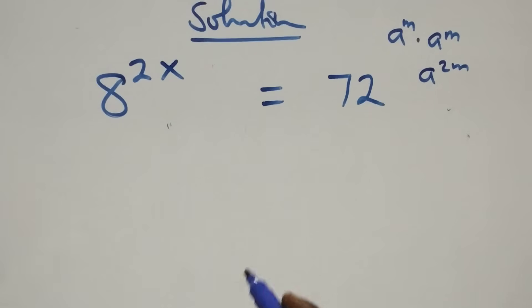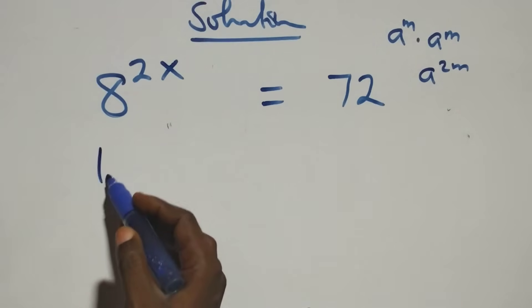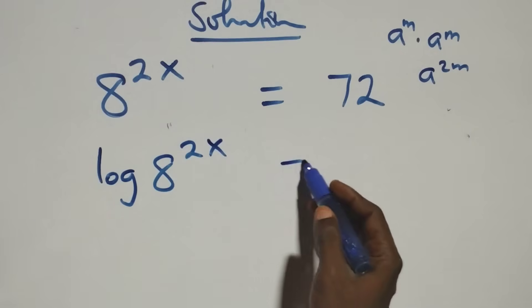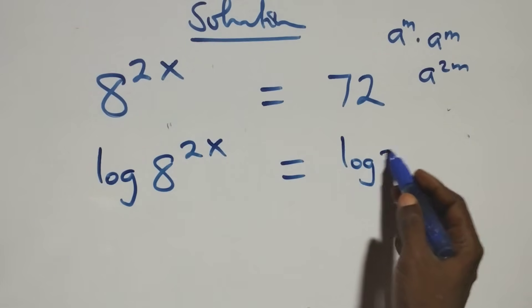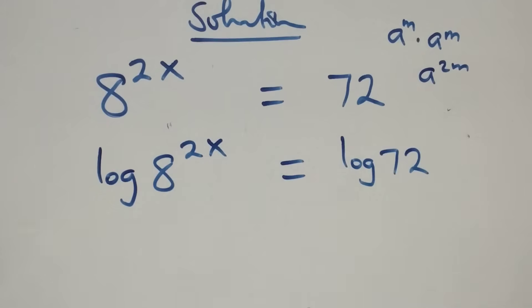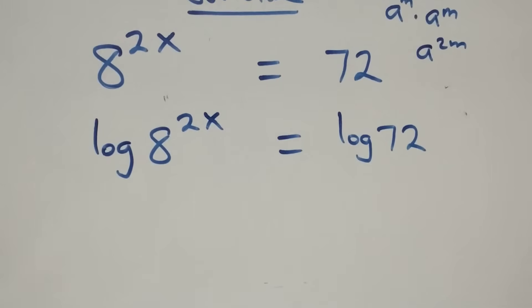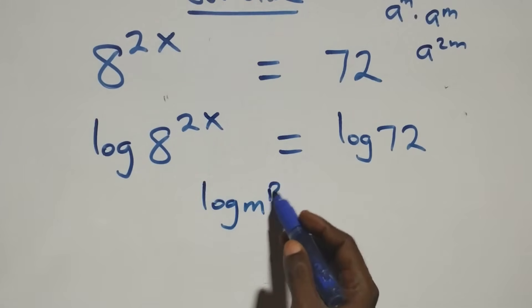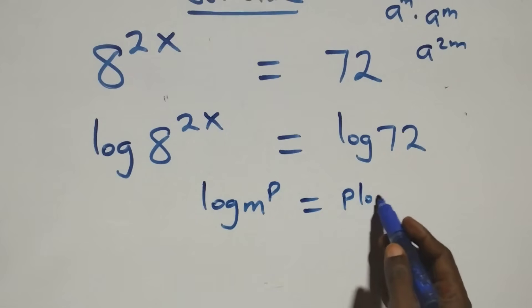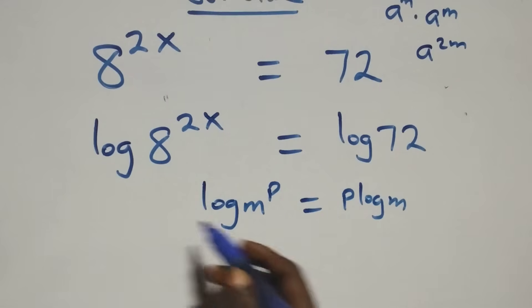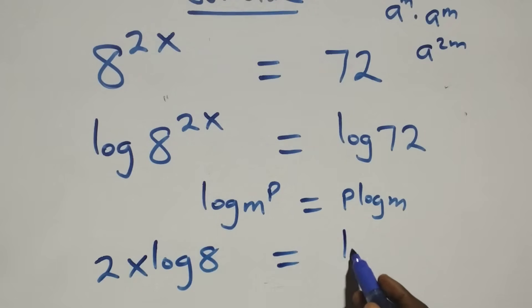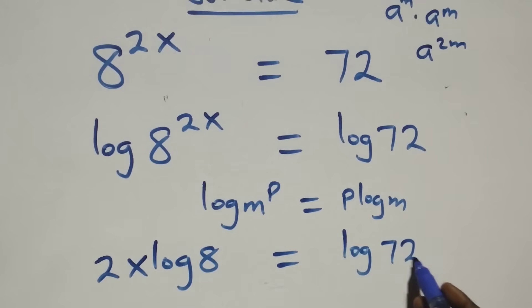The next step: we take the log on both sides. We have log of 8 raised to power 2x equals log 72. Then we apply the power rule of logarithms: log of n raised to power p equals p times log n. This gives us 2x times log 8 equals log 72.